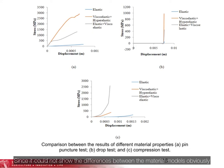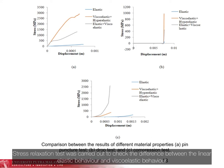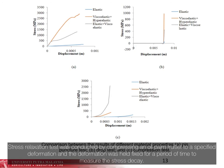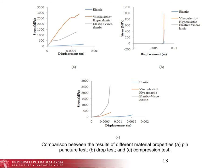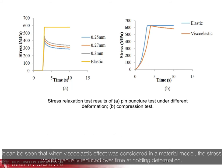Since it could not clearly show the differences between the material models, a stress relaxation test was carried out to check the difference between the linear elastic behaviour and visco-elastic behaviour. The stress relaxation test was conducted by compressing the oil palm fruitlet to a specified deformation, and the deformation was held fixed for a period of time to measure the stress decay. The results show that when the visco-elastic effect is considered in a material model, the stress will gradually reduce over time at holding deformation.